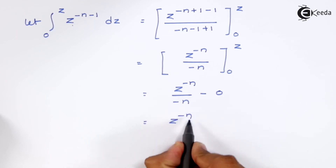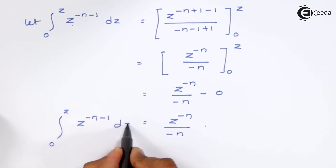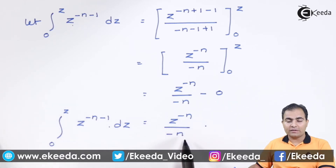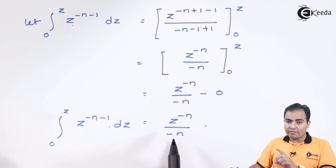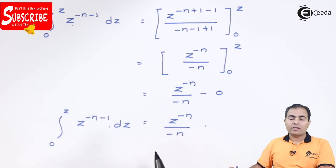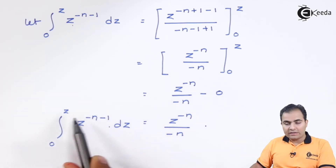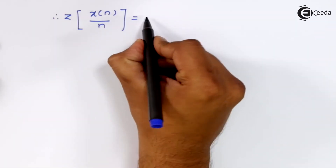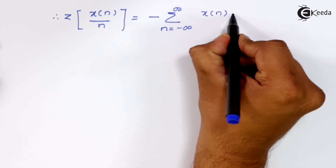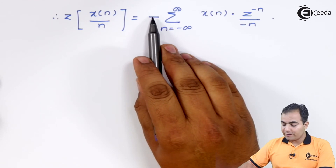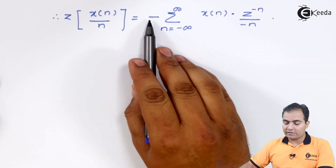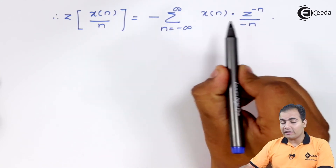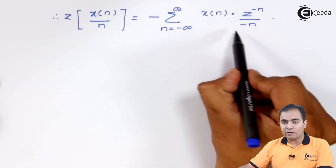The integration of Z to the power minus N minus 1 over the range from 0 to Z gives Z to the power minus N upon minus N. We have that same term in our expression, but with minus N in the denominator. Multiplying both sides by minus N yields the result. We place a minus sign and multiply by minus N so that minus 1 cancels and the statement is unchanged. We then replace this term with our integration expression — the integral of Z to the power minus N minus 1 with respect to Z from 0 to Z.